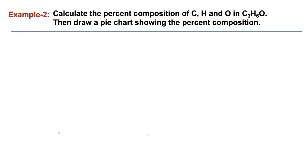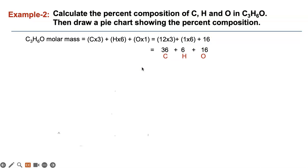It's an organic compound, and then draw a pie chart showing the percent composition. You can do the approximate percent composition in the pie chart. So first you find the molar mass like this. You have carbon times three, hydrogen times six, and oxygen times one. Carbon is 12, hydrogen is one, and oxygen is 16. These are the masses of carbon, hydrogen, and oxygen in this compound.